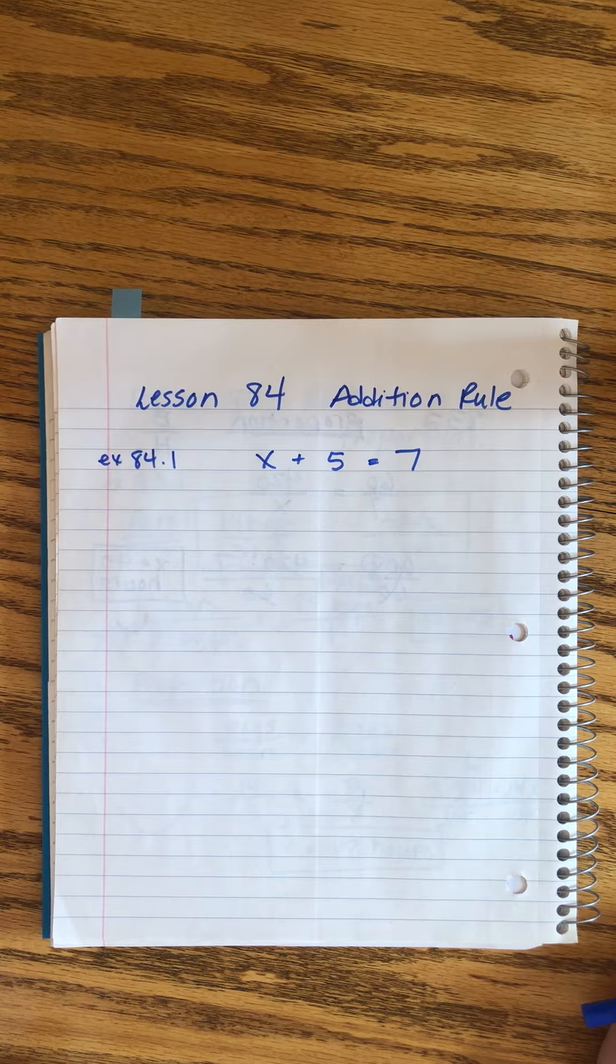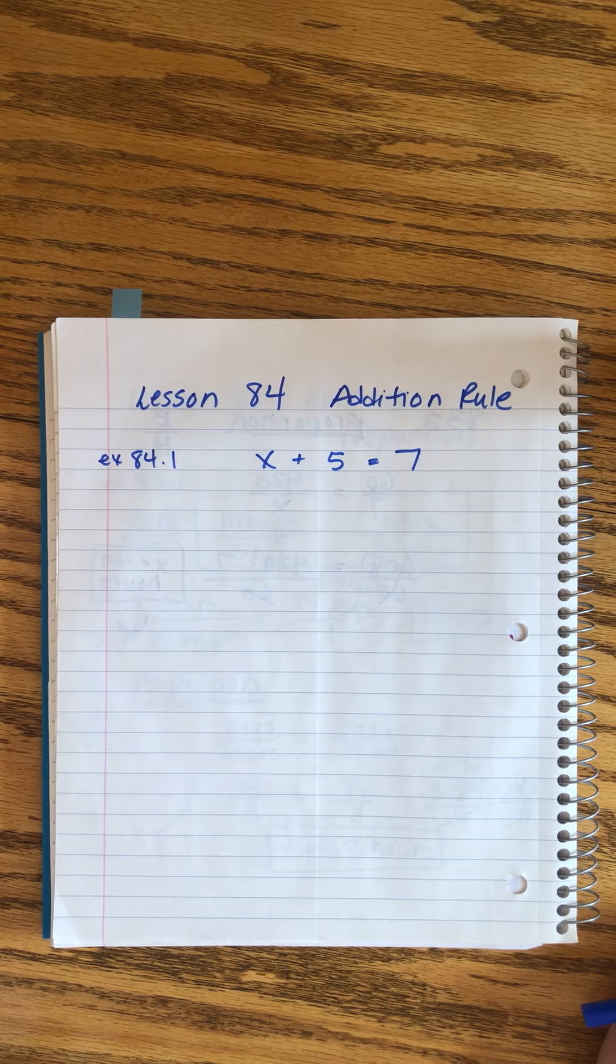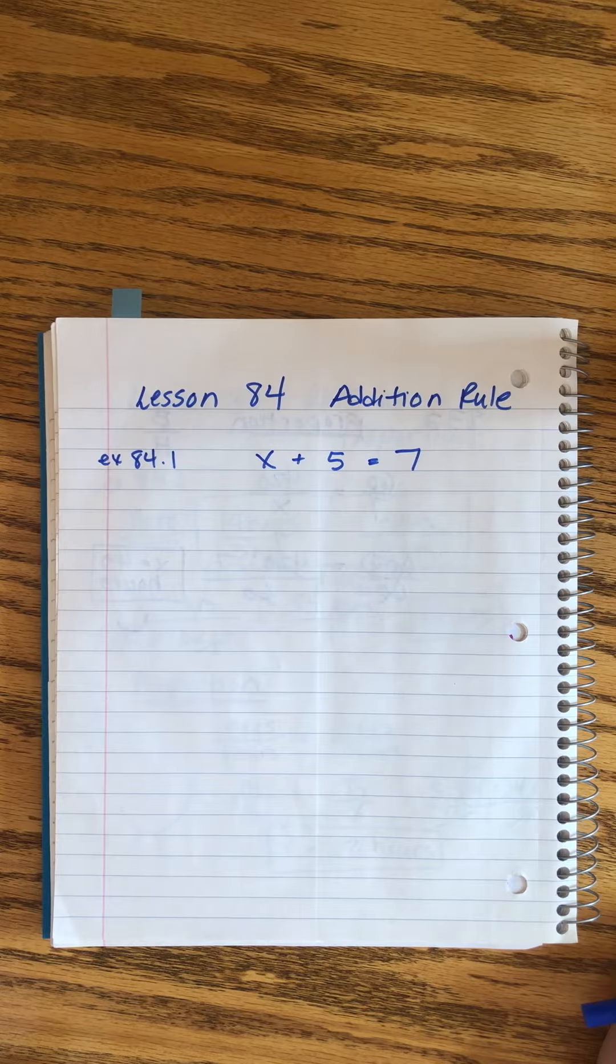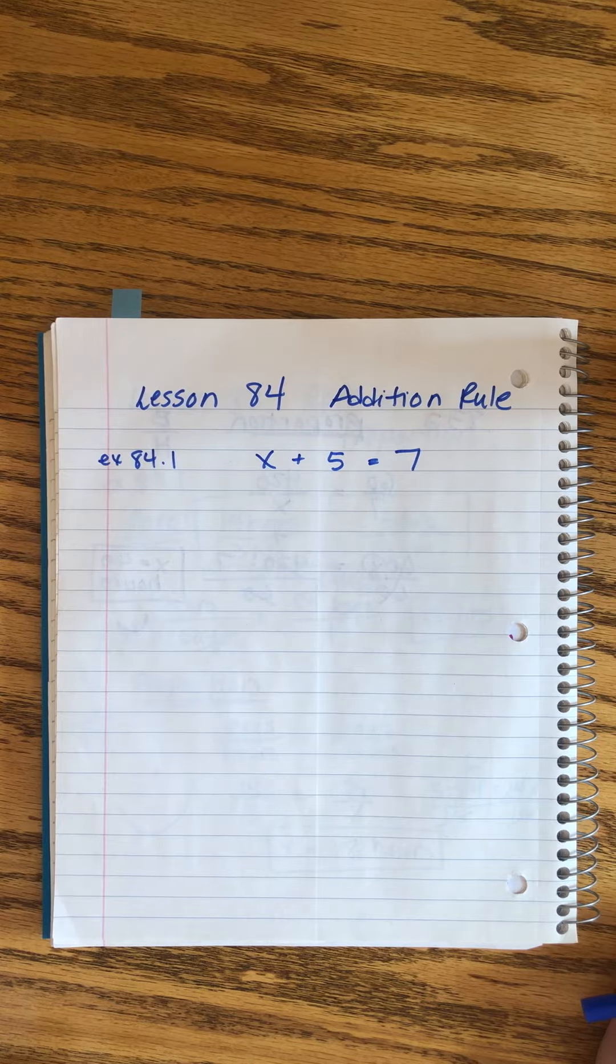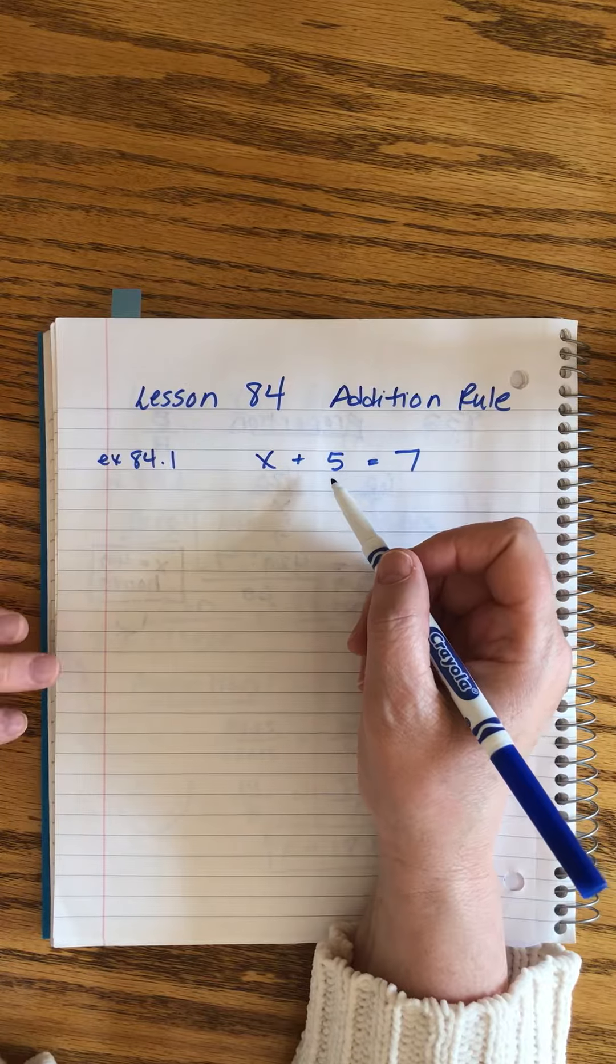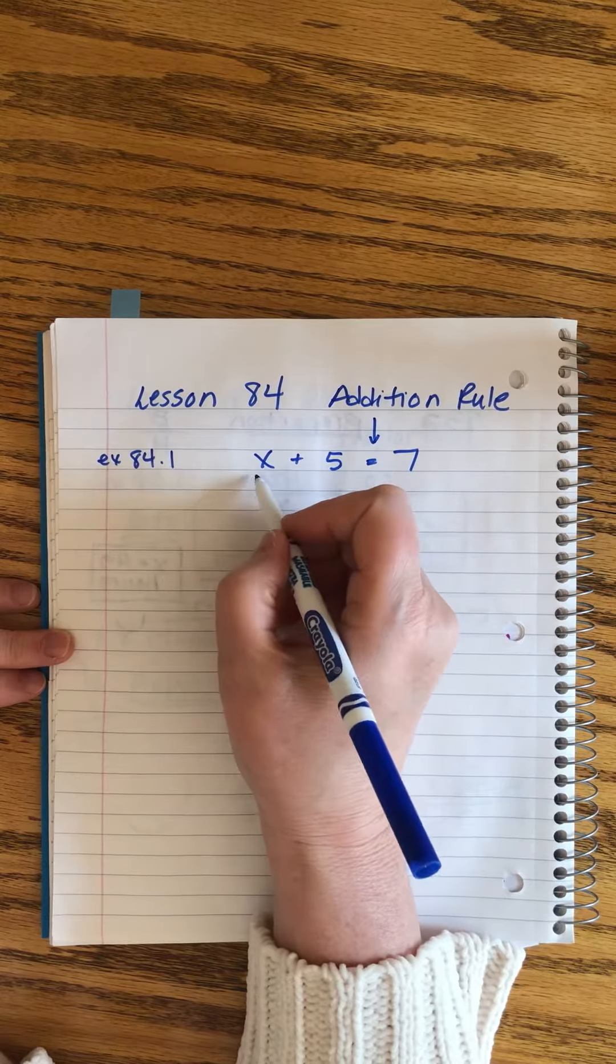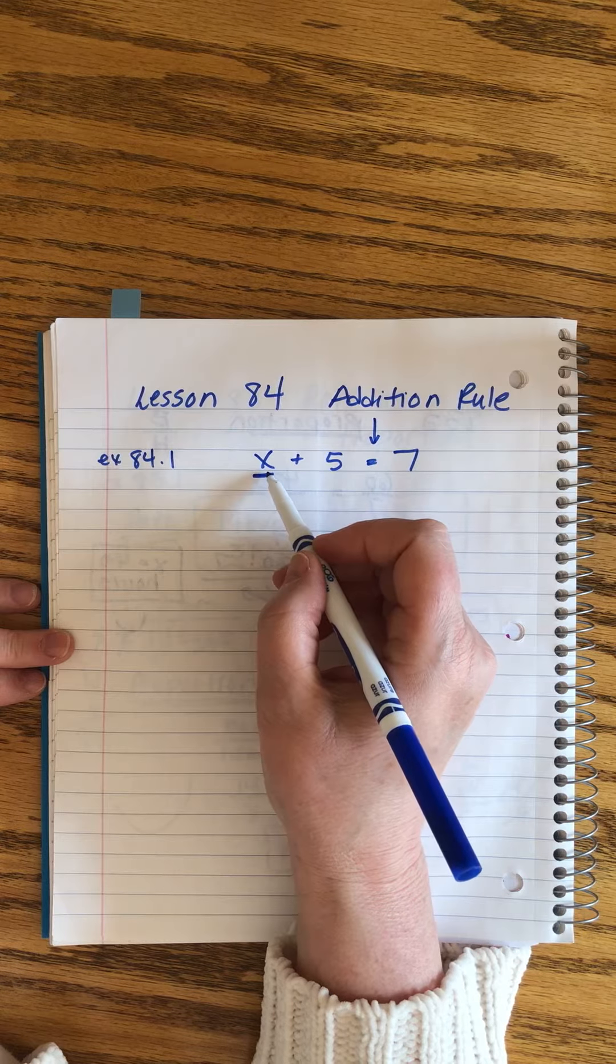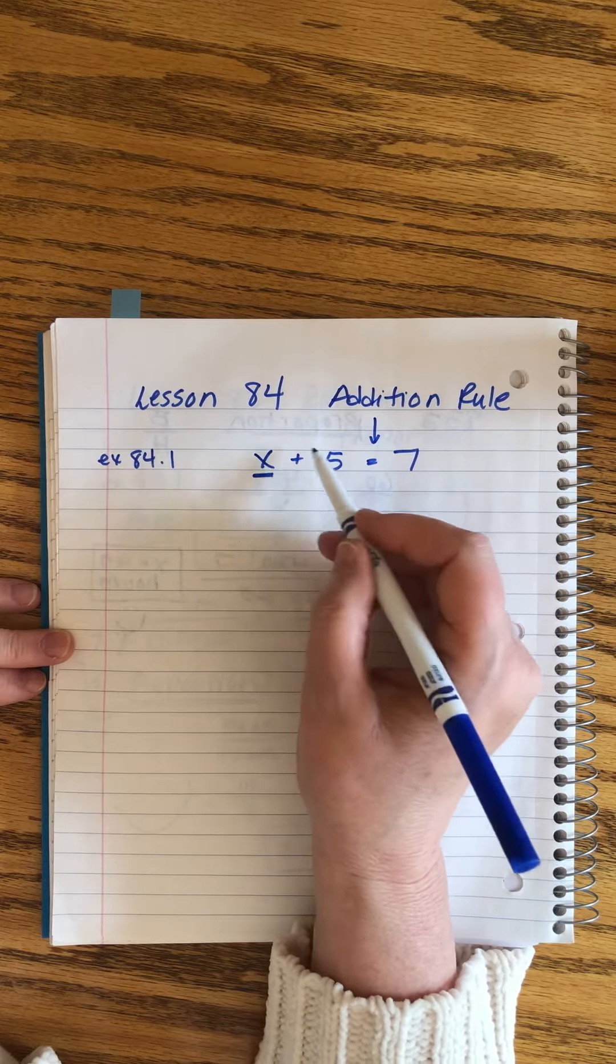But now I want to show you the format we use for proving that, because there are going to be problems that you look at that you're not going to be able to just immediately have the answer jump in your head. We use a rule that says we can add or subtract the same number from both sides and the equation will still be in balance. We always look for the letter first. That's what we want to get by itself. This plus 5 is attached to that, so the opposite of adding is subtracting. Subtract 5 from both sides.